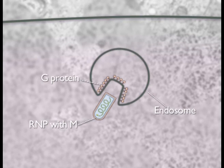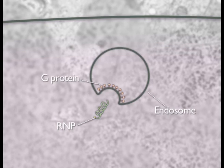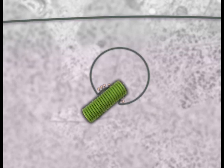Soon after, the M-protein dissociates from the nucleocapsid, exposing the ribonucleoprotein core. This is important for viral RNA synthesis to occur.